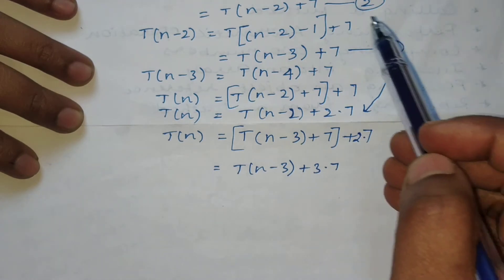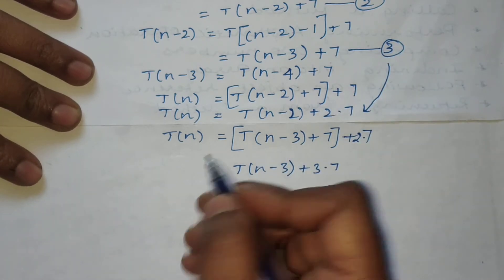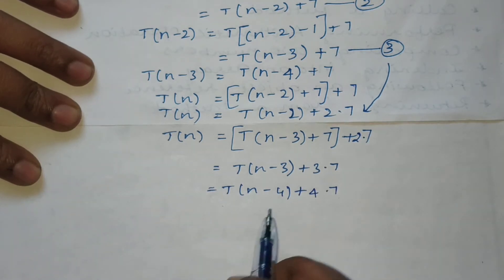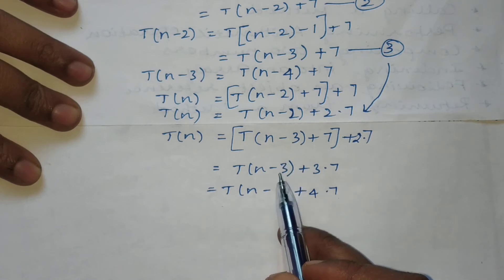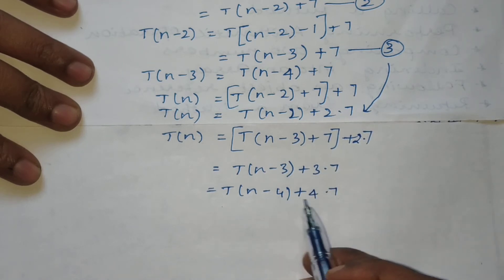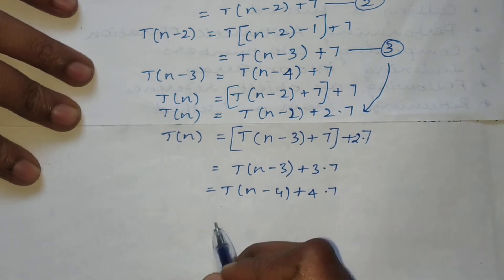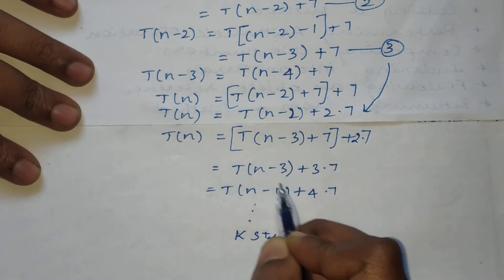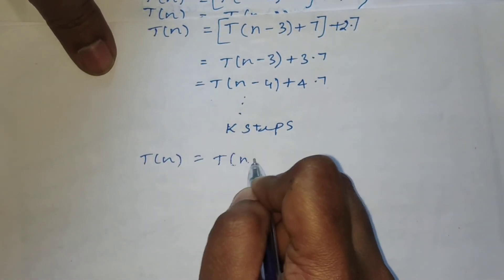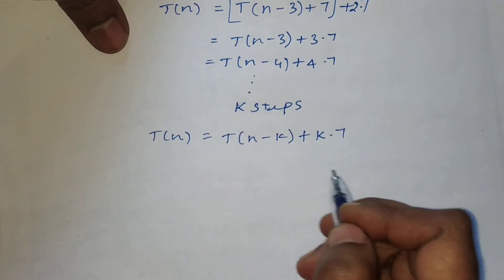This is back substitution — substituting equation 2 into 1, then 3 into that result, and so on. For the next iteration it becomes T(n-4) + 4×7. The pattern is clear: whatever constant appears in the bracket matches the multiplier of 7. It continues up to k steps, so we write: T(n) = T(n-k) + k×7.